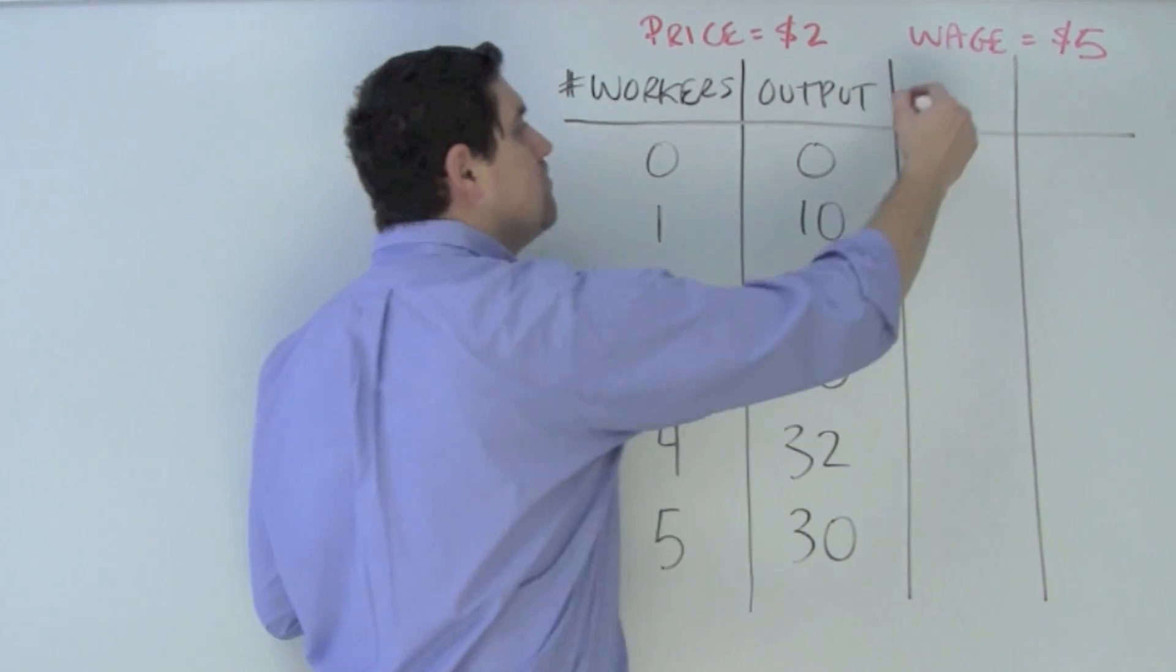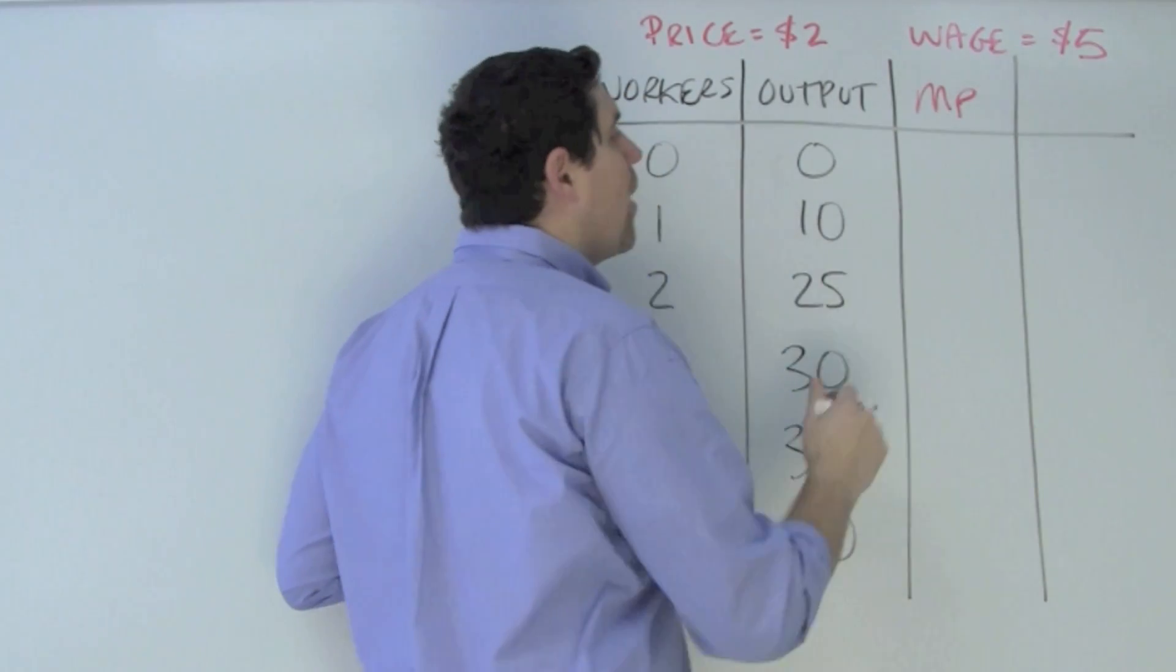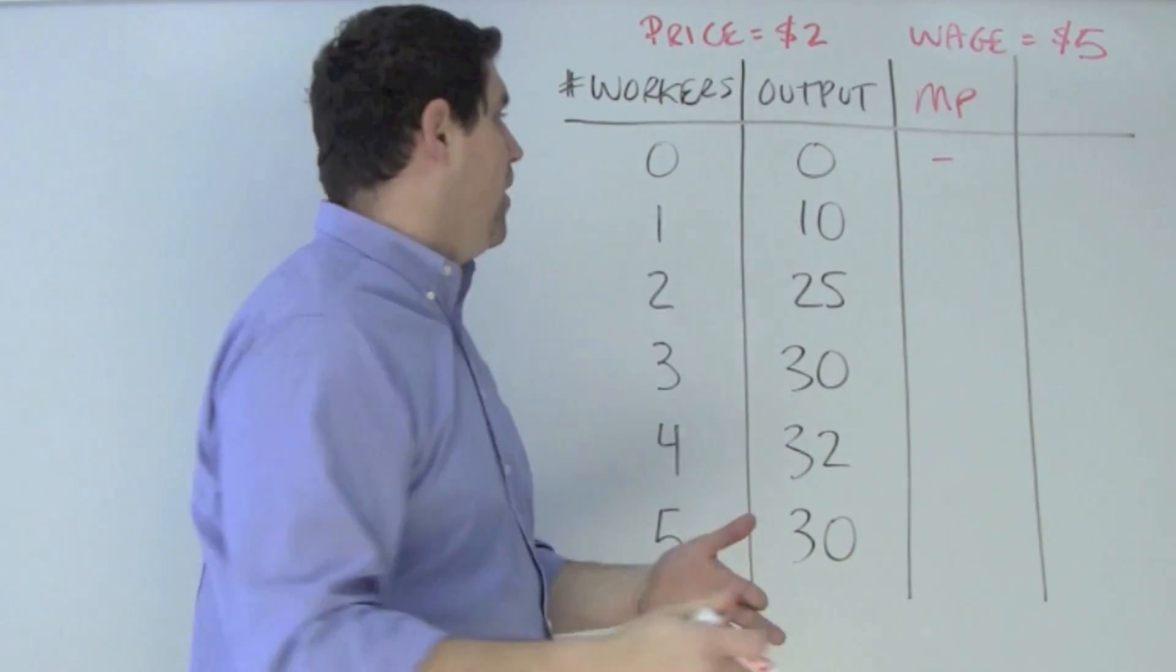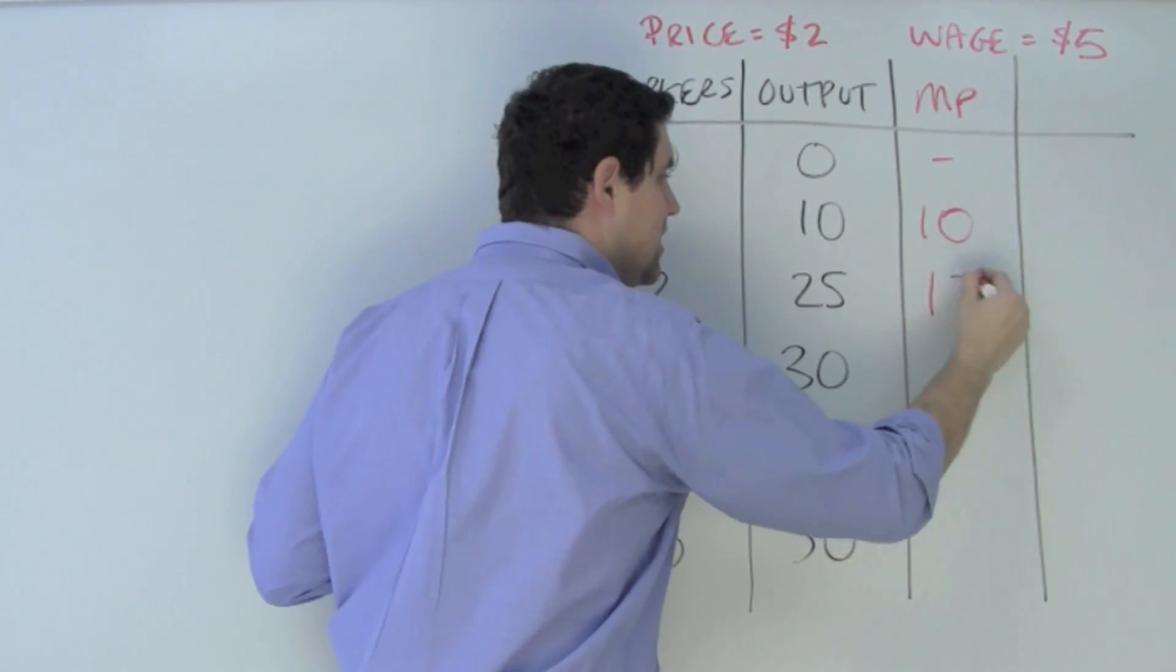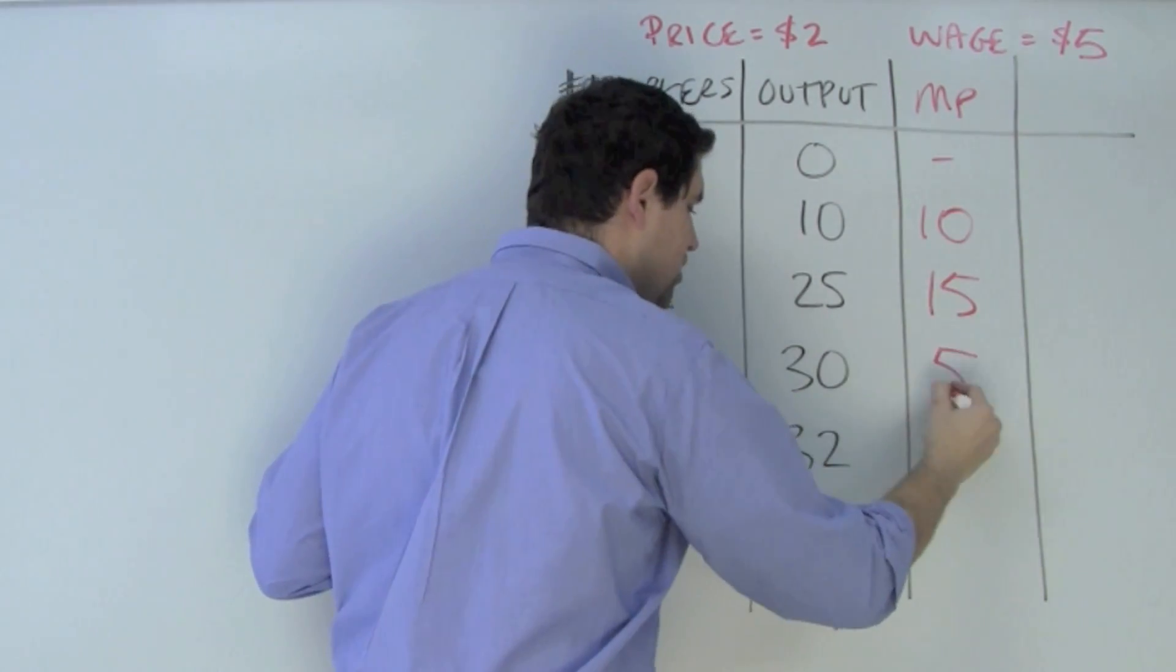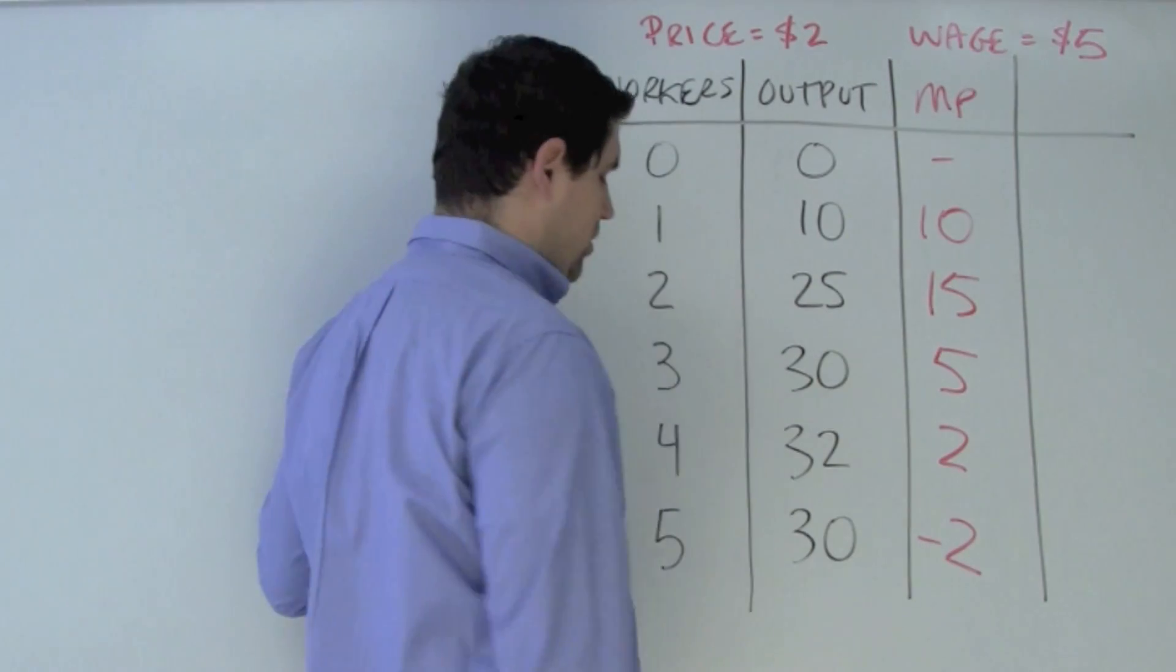The first thing you have to calculate is marginal product. Marginal product is the additional output produced from each additional input. So the very first worker adds an additional 10, next worker adds an additional 15, next worker adds an additional 5, additional 2, and an additional negative 2.